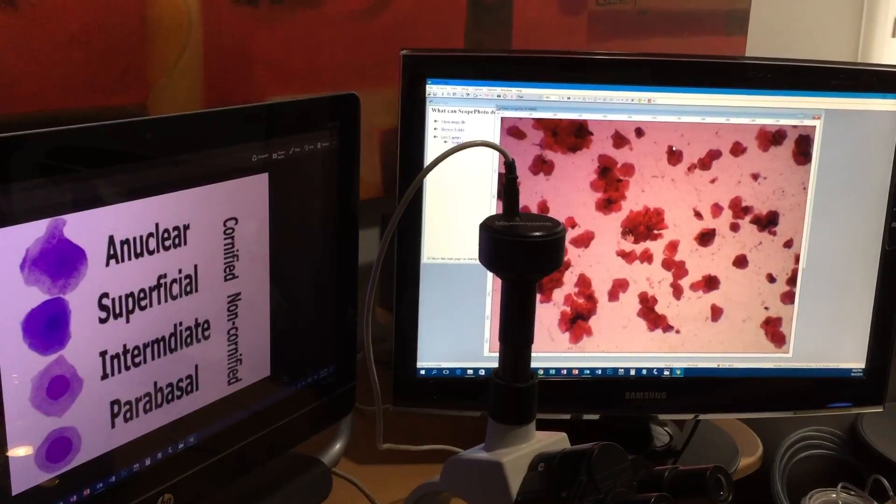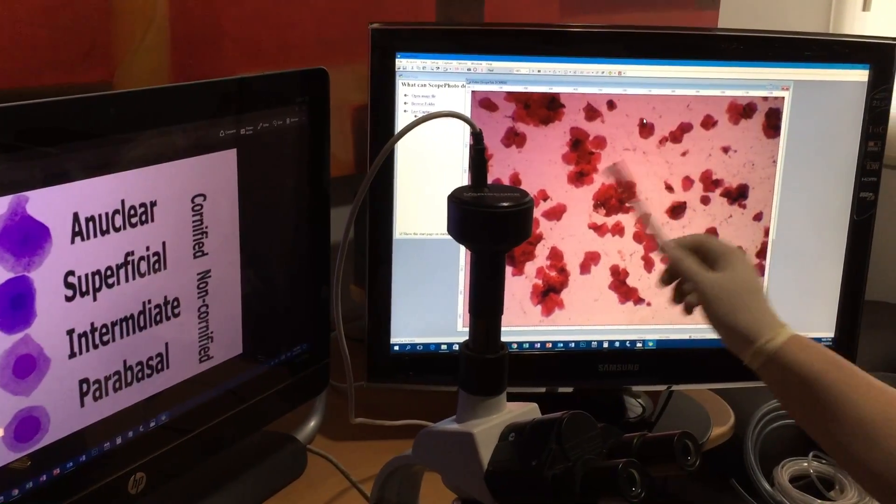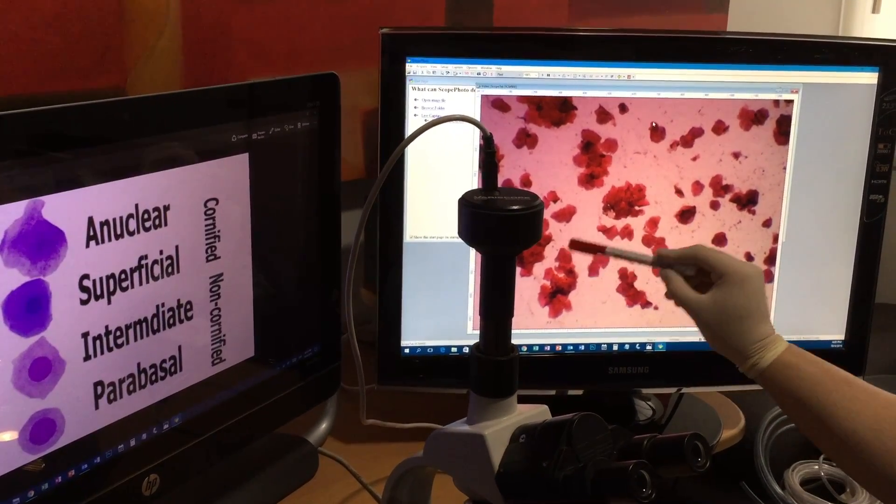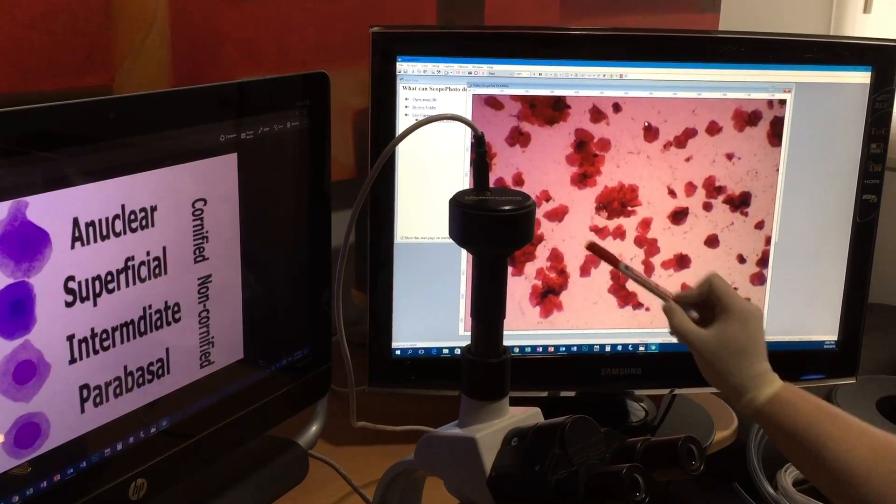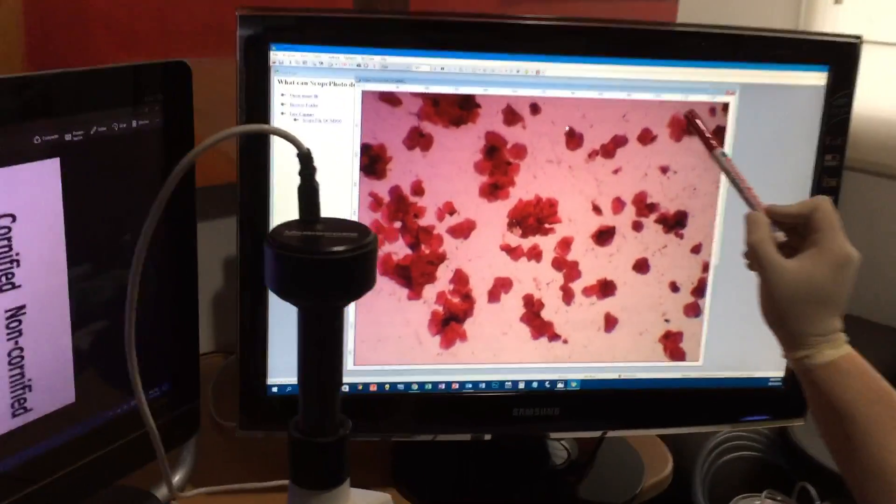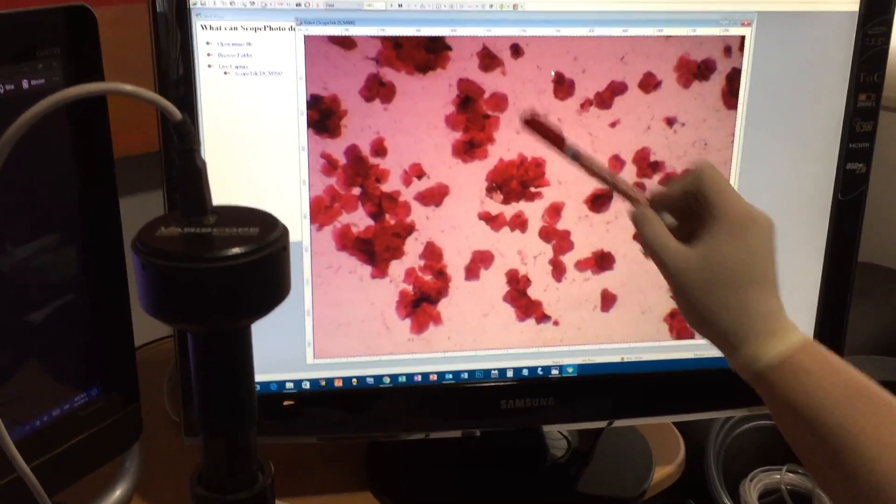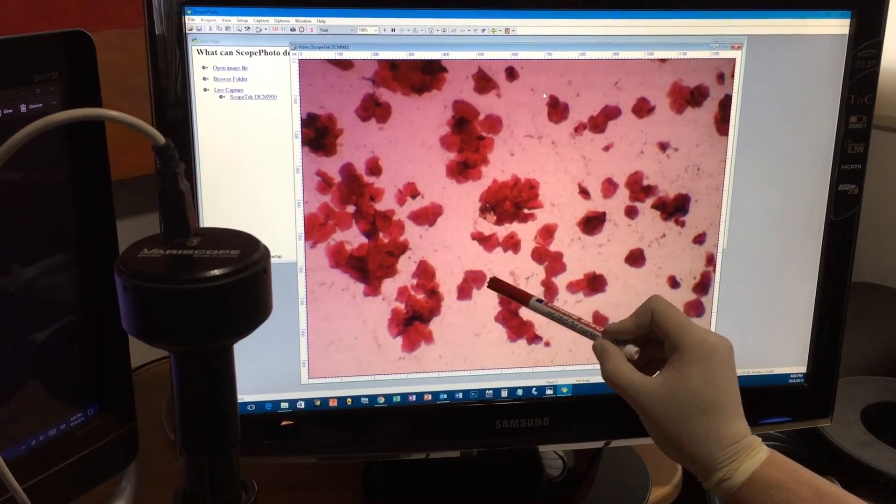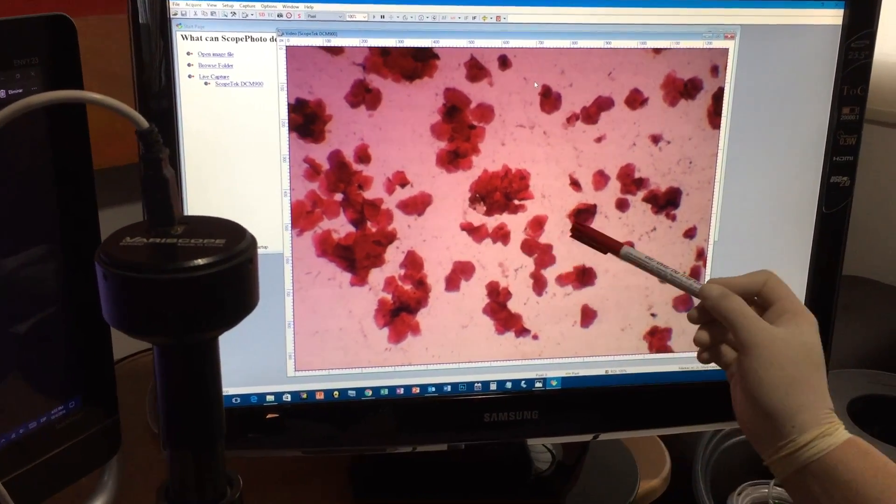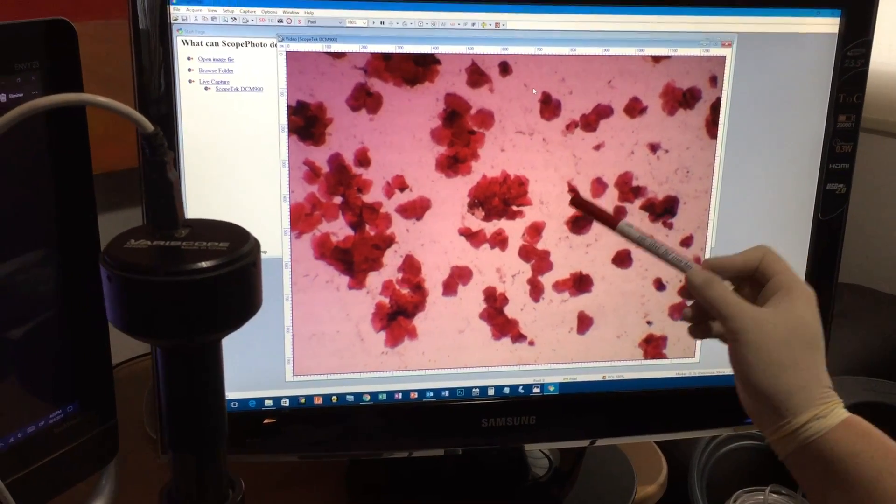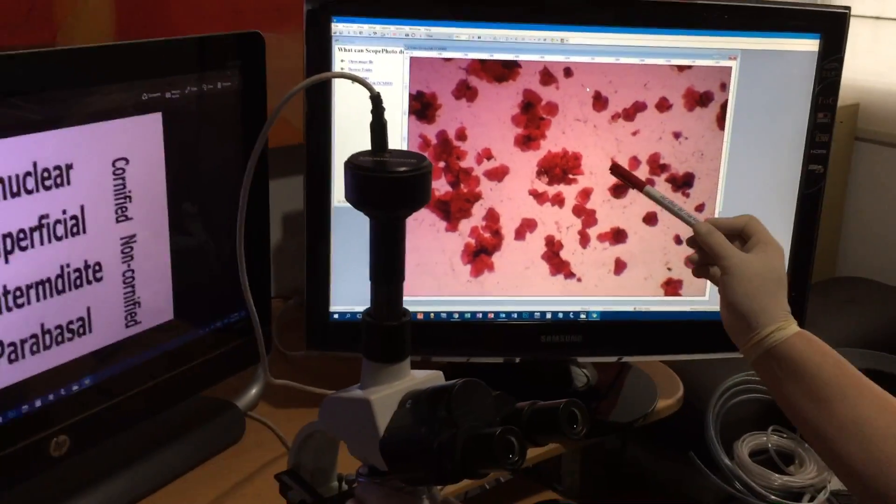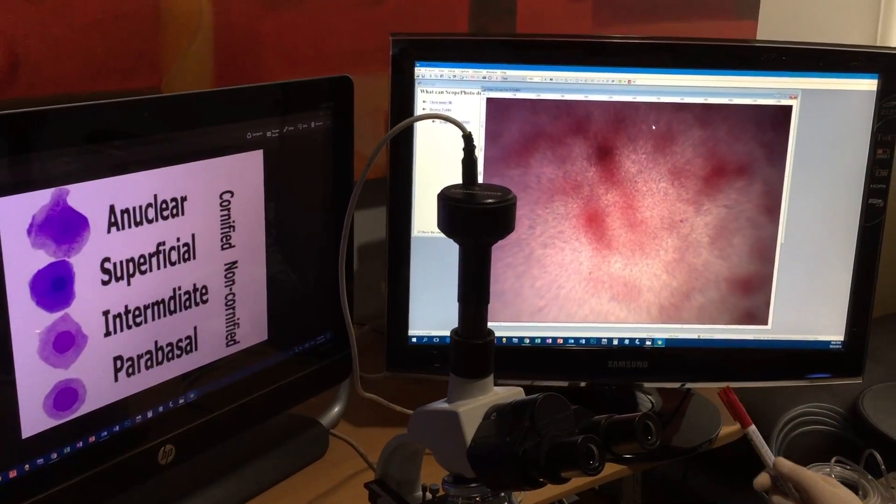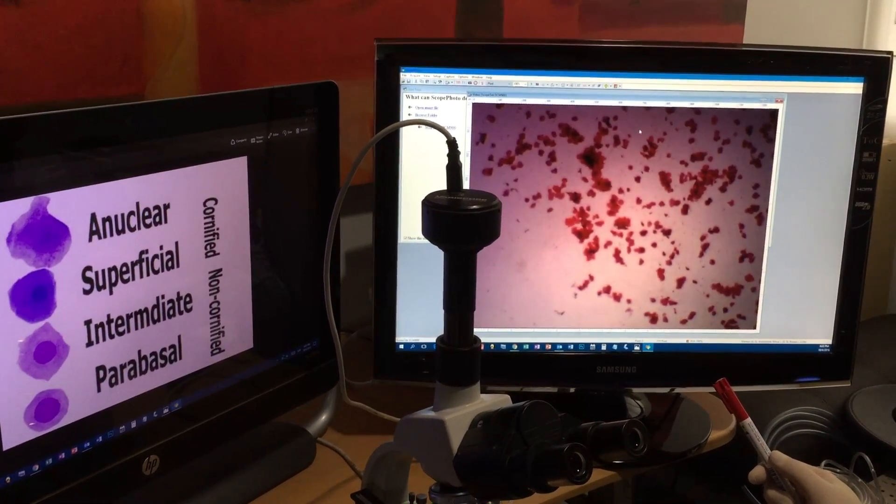So we have the slide here. As you guys can see, most of all these cells are already cornified, which means they don't have a nucleus inside. You can barely see them here. But most of them, what you want to look for, it looks like a Rice Krispie, like cereal, and without the nucleus inside. We're looking at it in 10x.